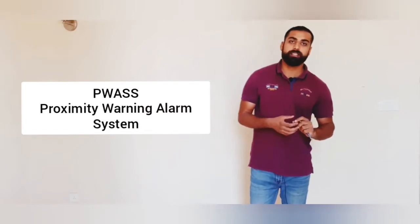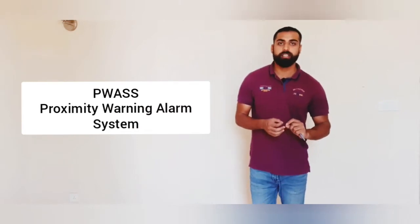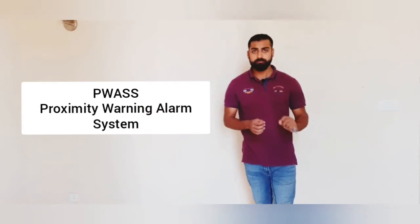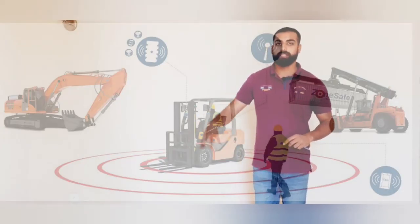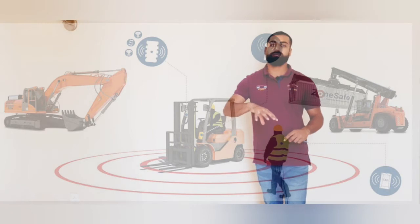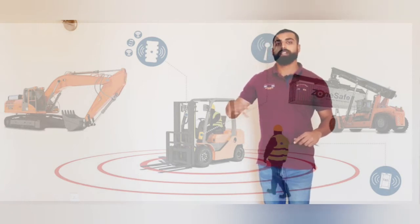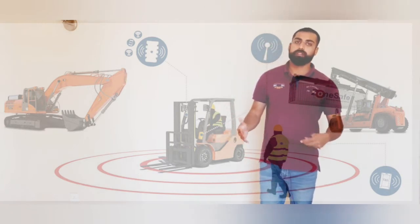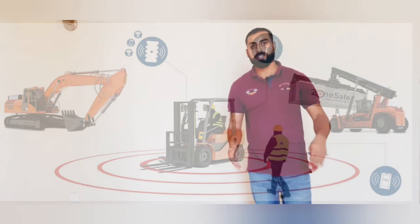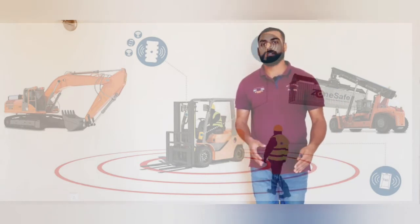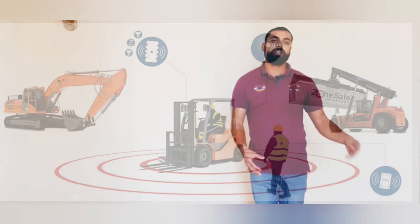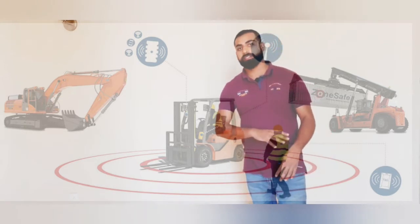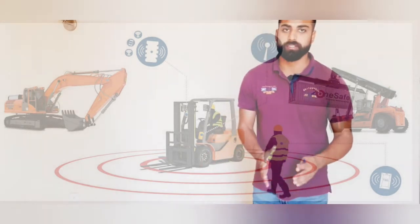Another commonly used abbreviation is PWAS — Proximity Warning Alarm System. This system indicates whenever you come into the surrounding area of equipment, specifically a crane. It starts raising an alarm when you come within five meters of the crane, warning you not to enter the area because heavy lifting is in progress.